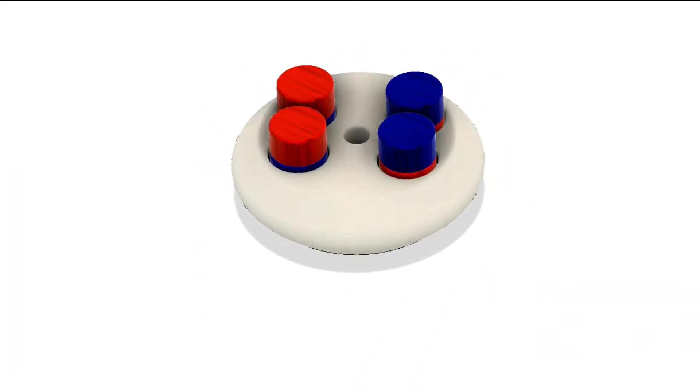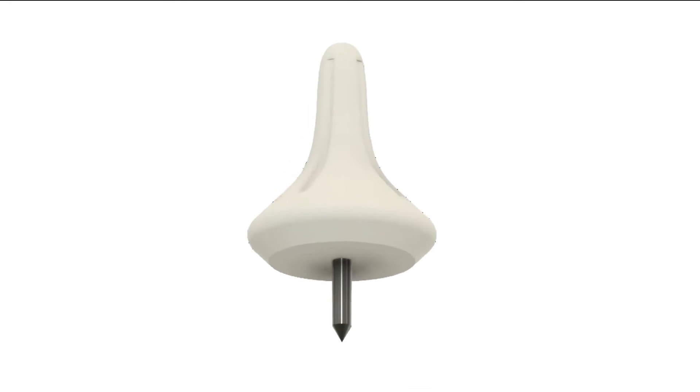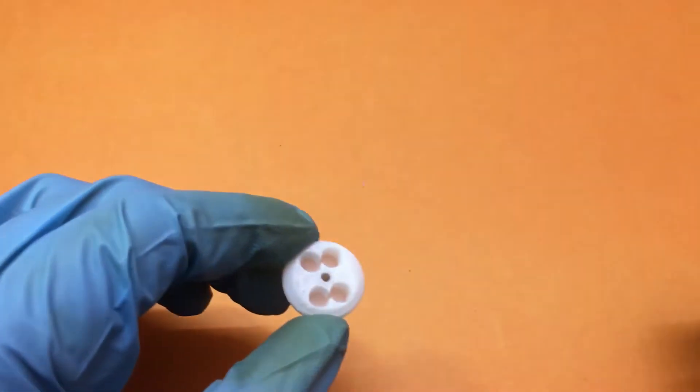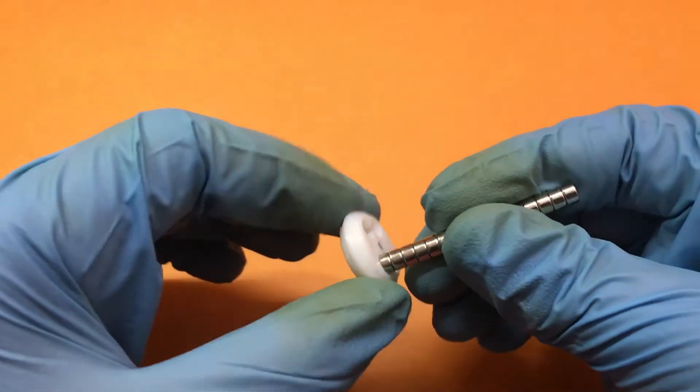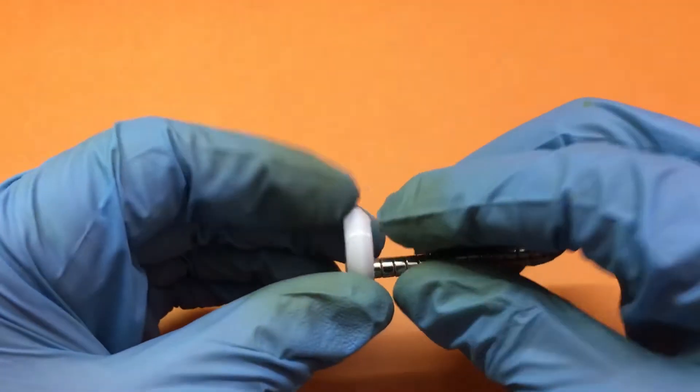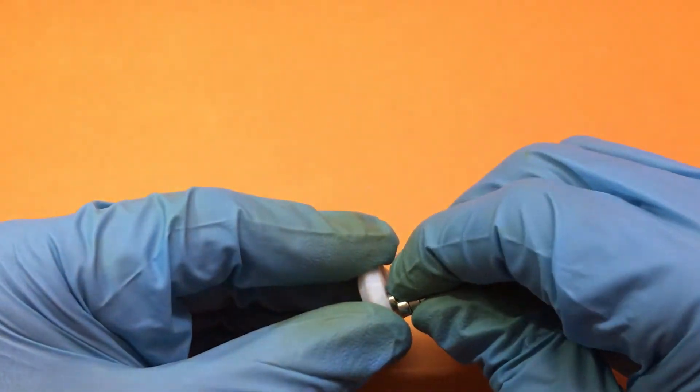Now let's make the spinning top. First, we'll insert neodymium magnets into the base. I'm using eight pieces of neodymium magnets, 3mm by 5mm dimensions. The polarity of the magnets will be opposite diametrically.